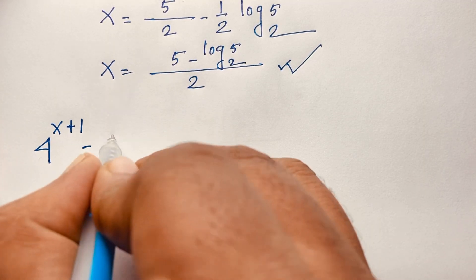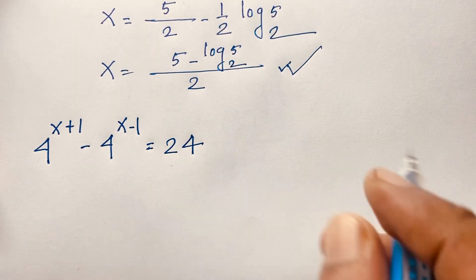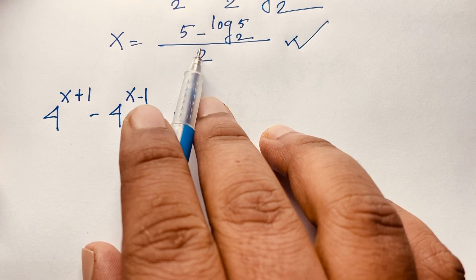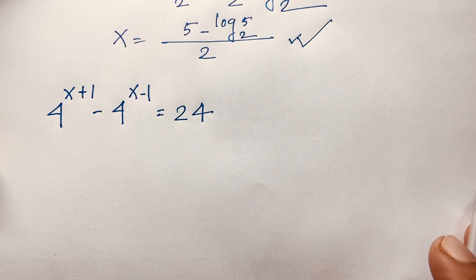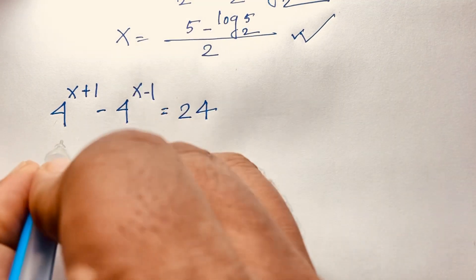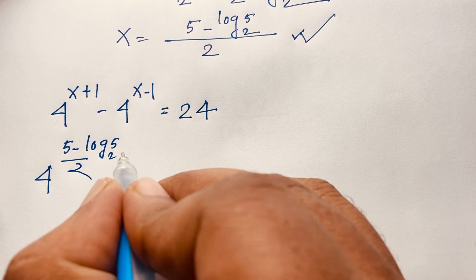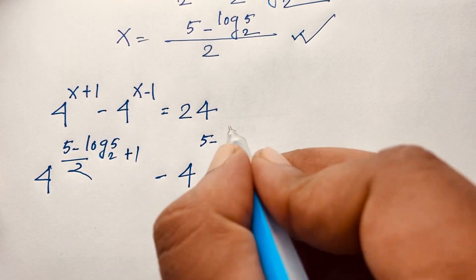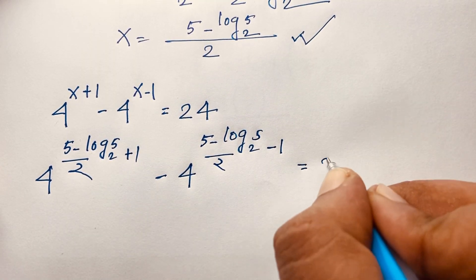We substitute x equals 5 minus log 5 base 2, over 2, into the expression. It becomes 4 to the power of (5 minus log 5 base 2)/2 plus 1, minus 4 to the power of (5 minus log 5 base 2)/2 minus 1, equals 24.